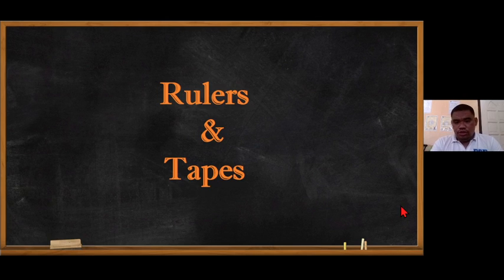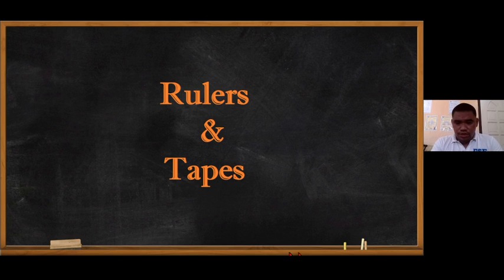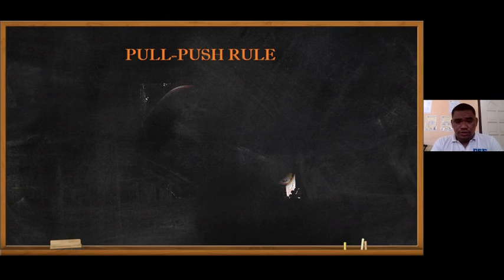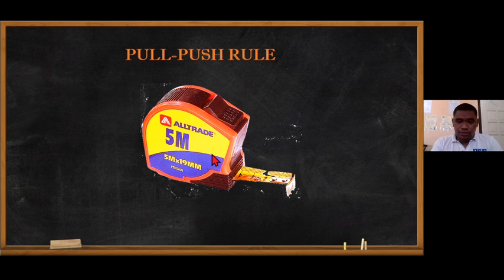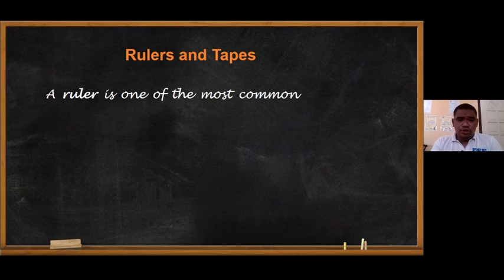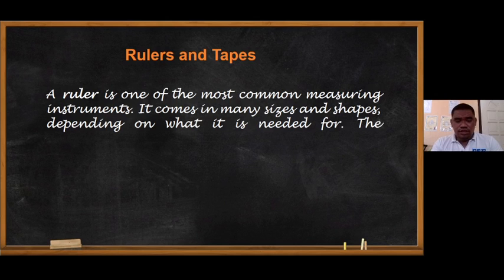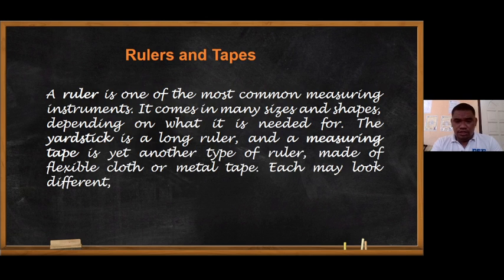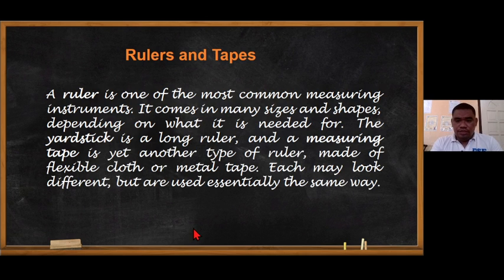In this video we'll be talking about rollers and tapes. We will go through the process of how to read the measurement on a pole push rule. First we have some tools here, so we will define the pole push rule. A roller is one of the most common measuring instruments. It comes in many sizes and shapes depending on what it is needed for. The yardstick is a long roller, and a measuring tape is another type of roller made of flexible cloth or metal tape.